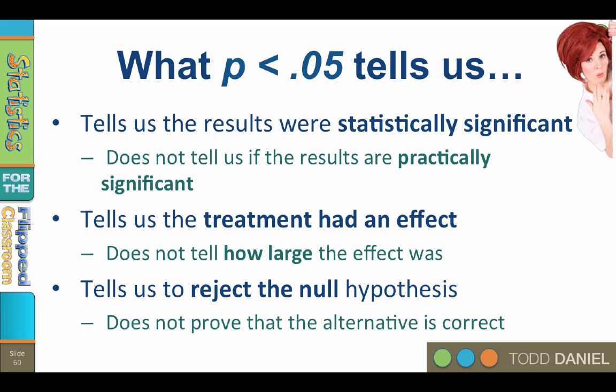Statistical significance tells us to reject the null hypothesis, but it does not prove that the alternative hypothesis is correct. Whenever we make a decision, we could make a mistake. As we learn more about hypothesis testing, it will be important that we not rely exclusively on p-values, but also consider things like effect size, confidence intervals, and the power of our test.